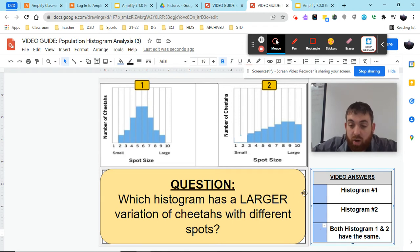So is it histogram one, is it histogram two, or is it both histogram one and two have the same variation of cheetahs with different spots?